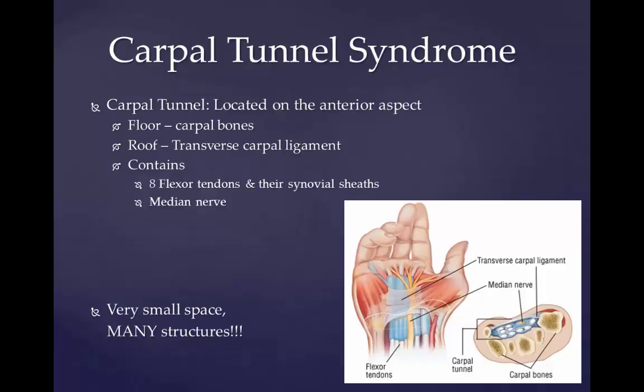The carpal tunnel is located on the anterior aspect of the wrist. It is composed of a floor — the carpal bones — and the roof — the transverse carpal ligament. It contains eight flexor tendons and their synovial sheaths, as well as the median nerve, all in a very small space. Carpal tunnel syndrome is a medical condition due to compression of the median nerve as it travels through the wrist at the carpal tunnel. The main symptoms are pain, numbness, and tingling.